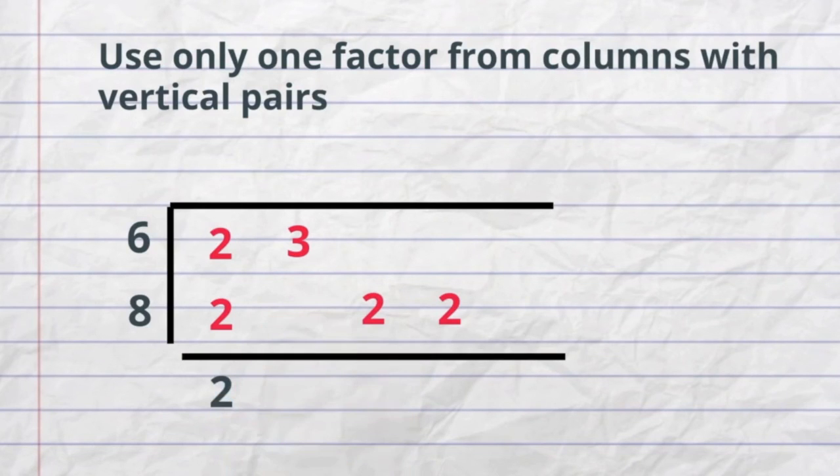Next, for 3, I do not have a vertical pair. The other 2, no vertical pair. Or the next 2, no vertical pair. So my greatest common factor of 6 and 8 is 2.